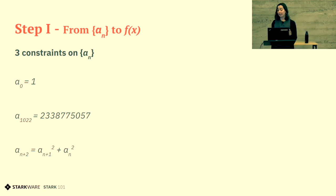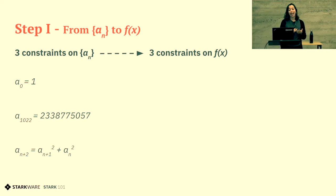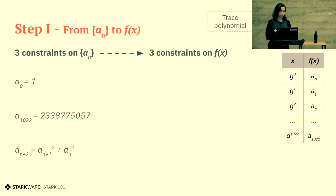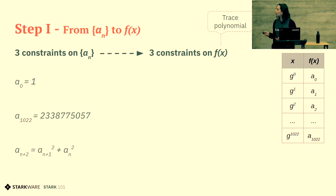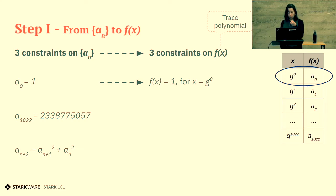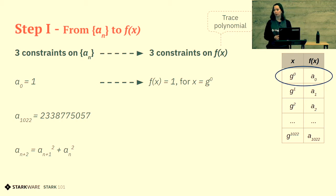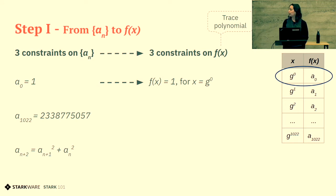The first step of the reduction is going to be modifying our constraint on aₙ to be a set of constraints on f(x). F(x) is the trace polynomial. To the right you see x and f(x), the powers of g, and our sequence. The way we created f, instead of saying a₀ equals 1, we can say f(x) equals 1 for x equals g to the power of 0, because we computed f via interpolation such that f(g⁰) equals a₀.